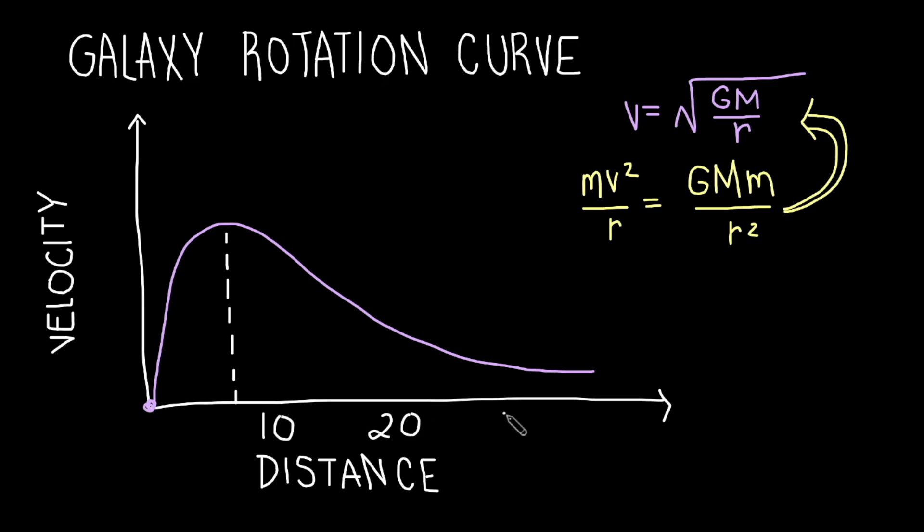After a certain distance, which we often measure in kiloparsecs, the mass of the stars in the galaxy does not change significantly. At this point, as the distance from the center of the galaxy increases, we expect the velocity to decrease.